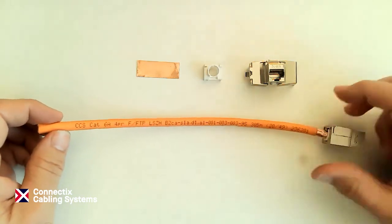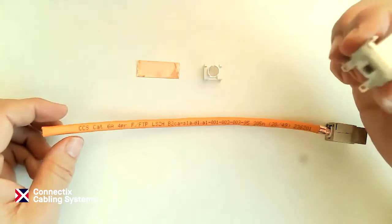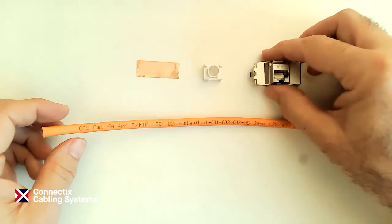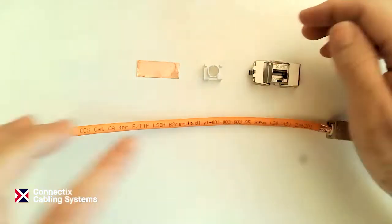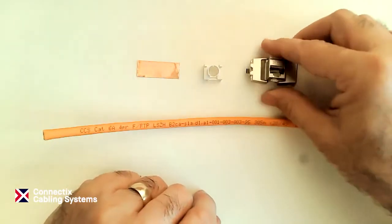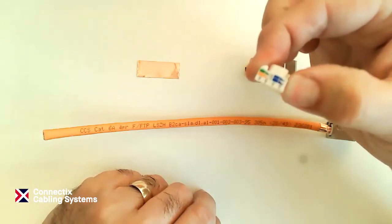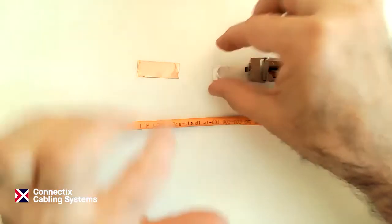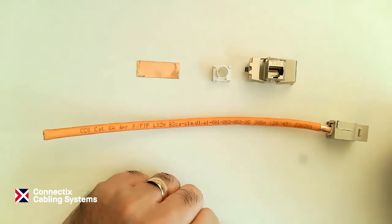I'm going to show terminating that onto our shielded Category 6A keystone jack which comes with three elements: the jack itself, the cap or collar that goes on the end of the cable, and a piece of copper tape to hold the drain wire in place.